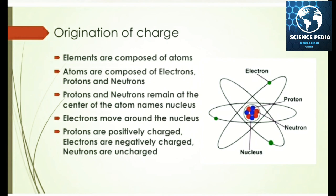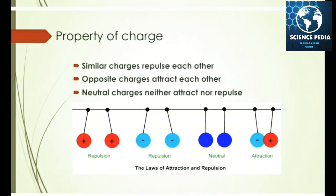Protons and neutrons remain at the center of the atom, called the nucleus. Electrons move around the nucleus. Protons are positively charged, electrons are negatively charged, and neutrons are uncharged.